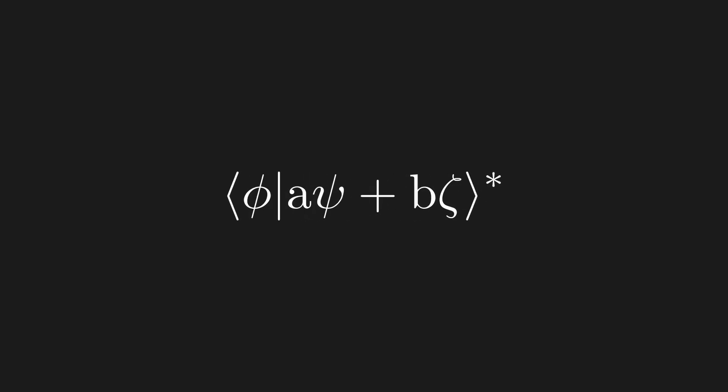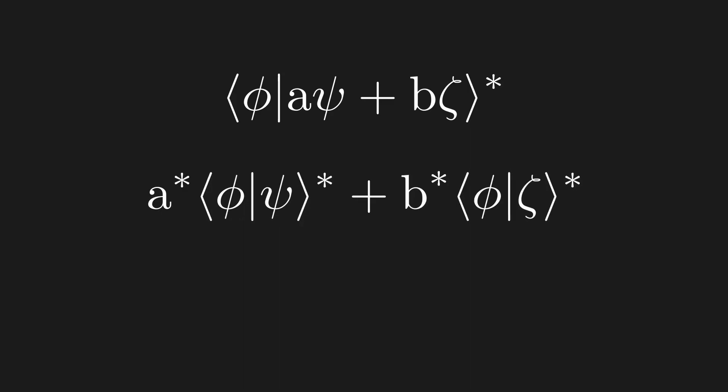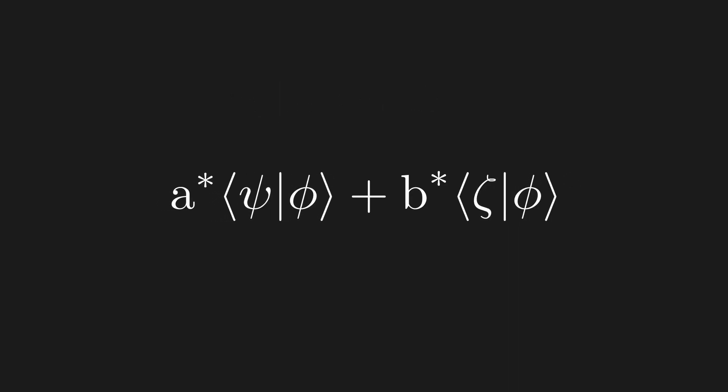We can first flip it, giving us the complex conjugate. Then, we can use the linearity of the right slot, making sure to distribute the conjugate accordingly. Then, we can flip the inner products again, which cancels out the conjugate. So, what we get are inner products with conjugated coefficients.